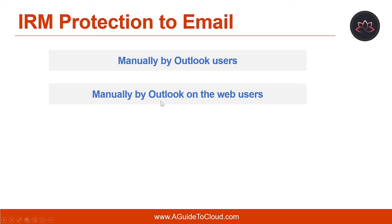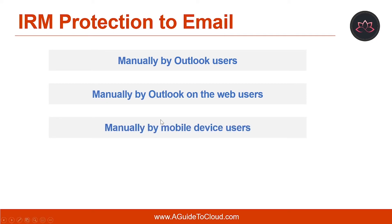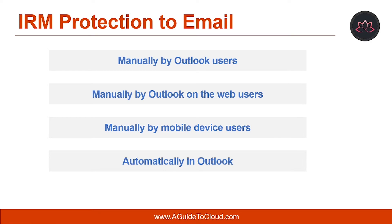Next is manually by users in Outlook on the web. When an administrator enables IRM in Outlook on the web, formerly known as Outlook Web App, users can apply IRM to messages they send and view IRM-protected messages they receive. The third method is manually by users in Exchange ActiveSync. When an administrator enables IRM in Exchange ActiveSync, users can view, reply to, forward, and create IRM-protected messages on an ActiveSync mobile device. Another method is automatically in Outlook — administrators can create Outlook protection rules to automatically apply IRM protection to messages. Outlook protection rules are automatically deployed to Outlook clients and IRM protection is applied by Outlook when the user is composing a message.